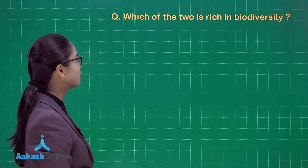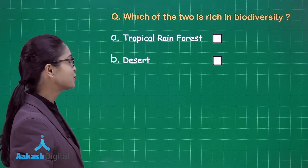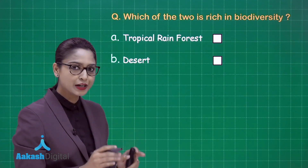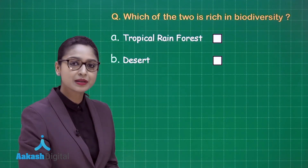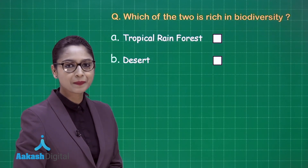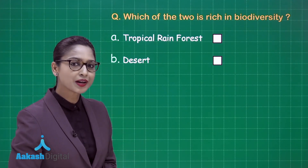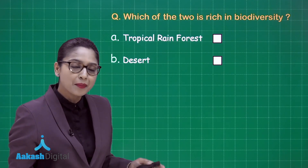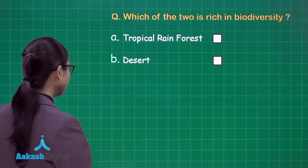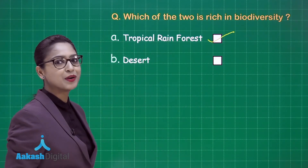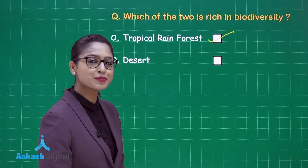Let's move on to a question: which of the two is rich in biodiversity — tropical rainforest or desert? Being rich in biodiversity means it inhabits more number of species. We very well know that in tropical rainforests, more number of plants, animals, and microbes are going to be found as compared to the desert.